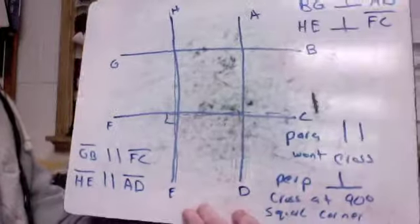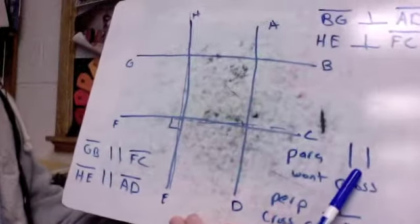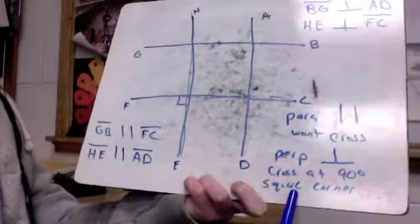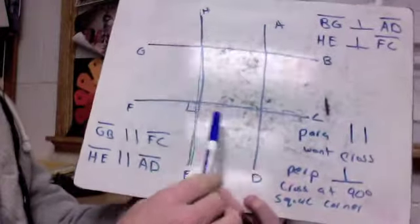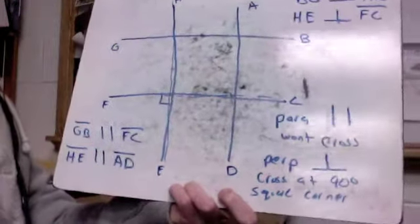So parallel won't cross. Here's the symbol we use. Perpendicular does cross at a 90 degree angle or that square corner and this is the symbol we use for that.